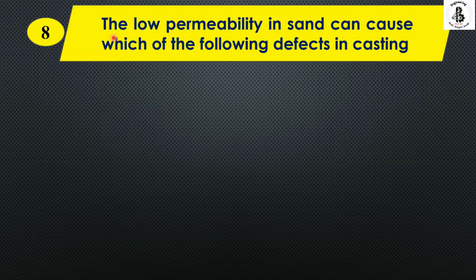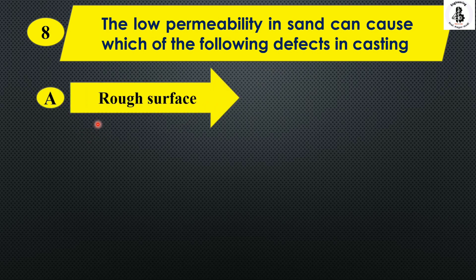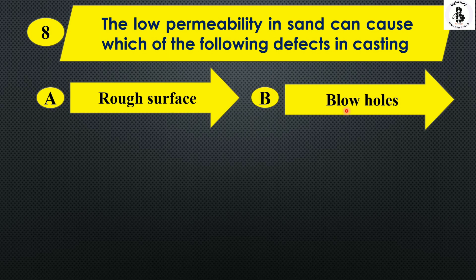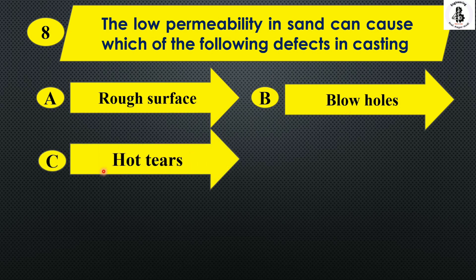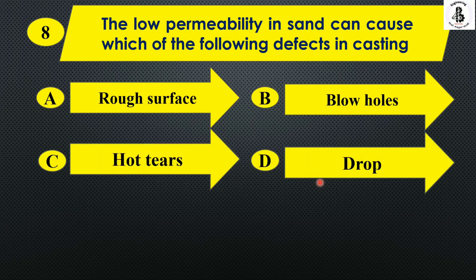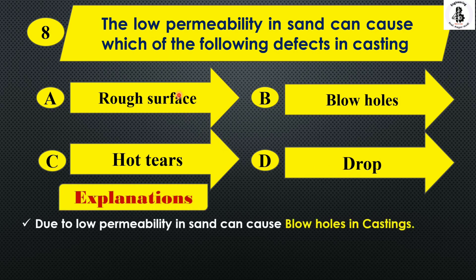Next: low permeability in sand can cause which of the following defects in casting? Option A rough surface, option B blow holes, option C hot tears, and option D drop. Basically, low permeability in sand causes blow holes in castings. So the answer is option B.